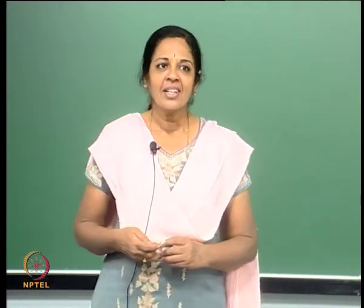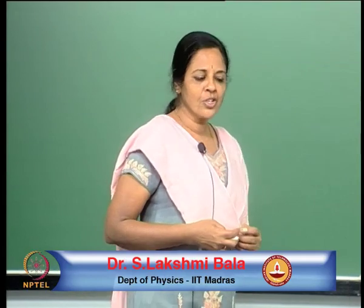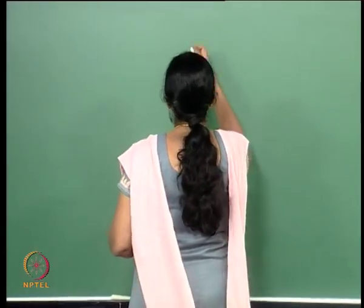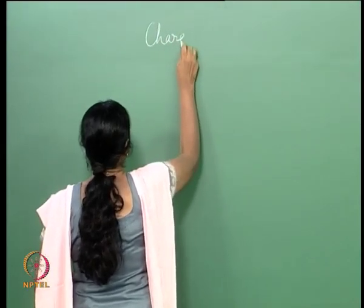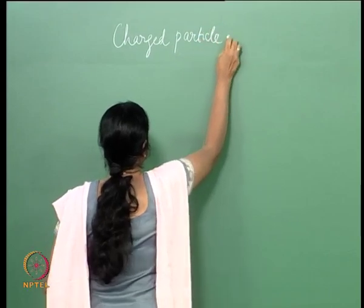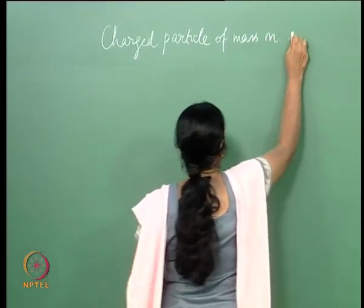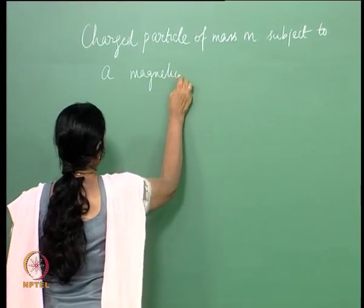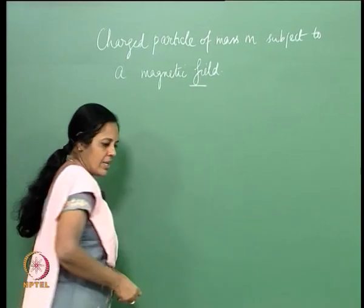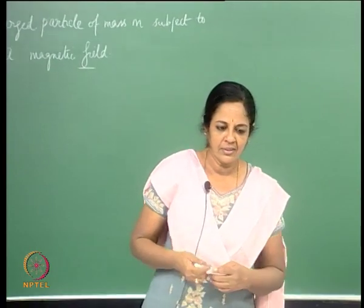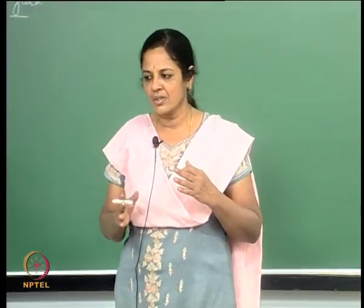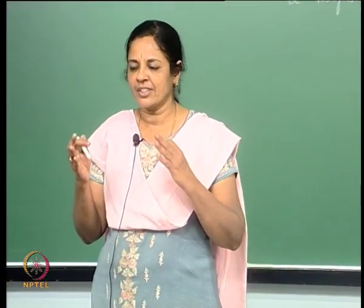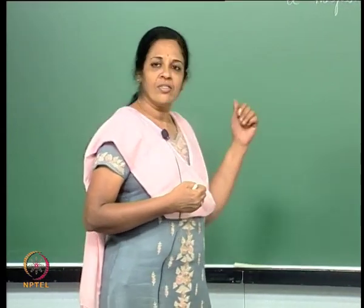Yesterday we were talking about a charged particle in a homogeneous magnetic field, and I said I will take the field along the z direction. So today we will continue with that problem of a charged particle of mass m subject to a uniform magnetic field. As I mentioned yesterday, the eigenfunctions would involve the eigenfunctions of the linear harmonic oscillator type, and also a part of the eigenfunction would correspond to that of a free particle. We will see how exactly that comes.